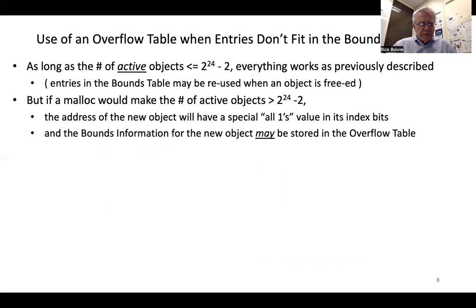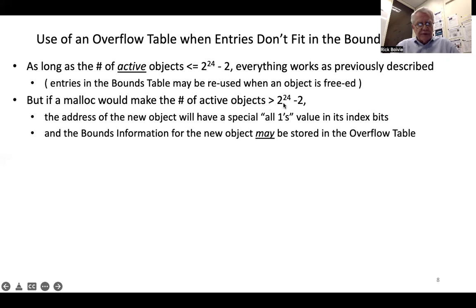We have this concept of an overflow table, which we use when the entries don't fit in our regular bounds information table. As long as the number of active objects is less than or equal to 2^24 minus 2, everything works as previously described, since we reuse entries in our bounds information table when an object is freed. But if a malloc would make the number of active objects greater than 2^24 minus 2, we use a special all-ones value in the index bits of a pointer to indicate that this object's bounds information is stored in the overflow table.